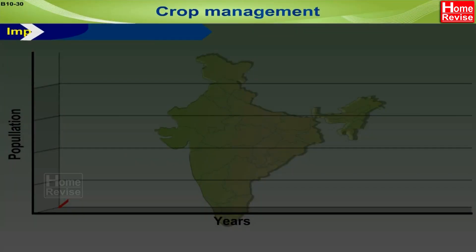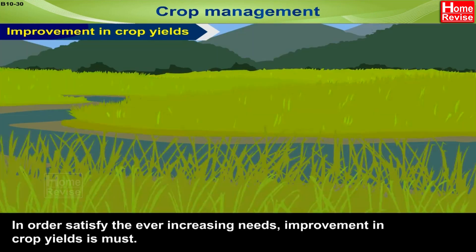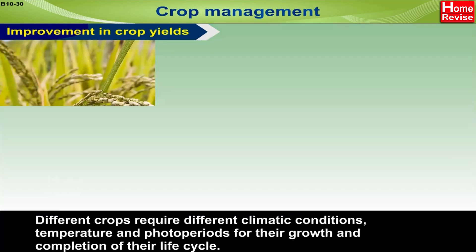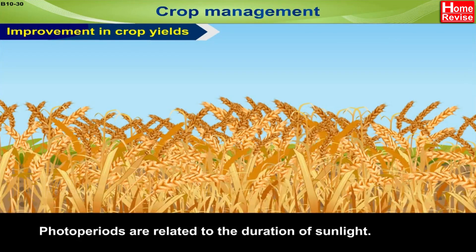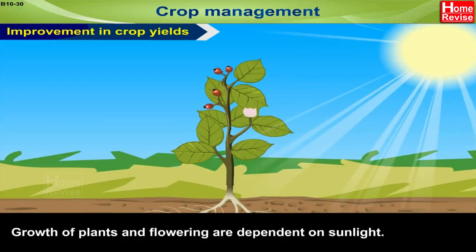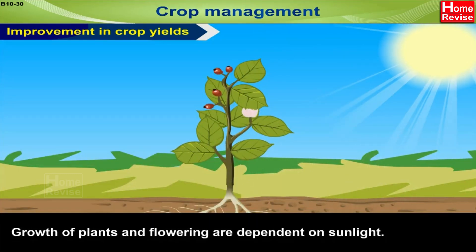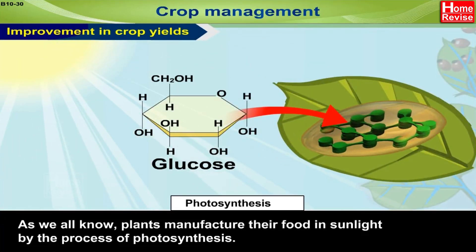Crop management: improvement in crop yields in order to satisfy the ever-increasing needs — improvement in crop yields is a must. Different crops require different climatic conditions, temperature, and photo periods for their growth and completion of their life cycle. Photo periods are related to the duration of sunlight, and the growth of plants and flowering are dependent on sunlight. As we all know, plants manufacture their food in sunlight by the process of photosynthesis.